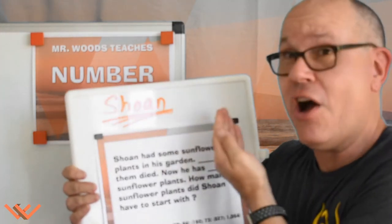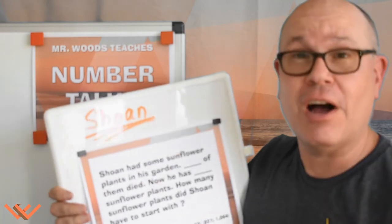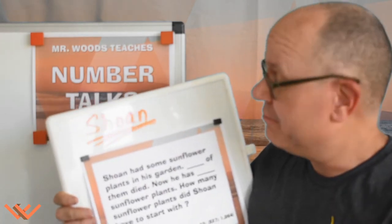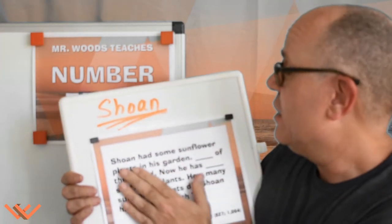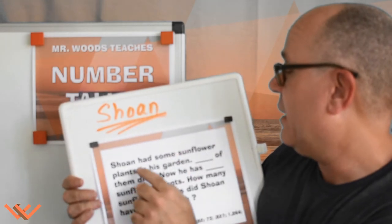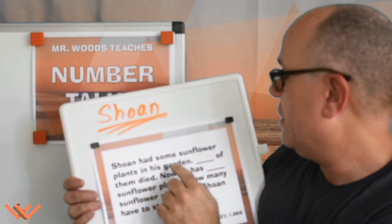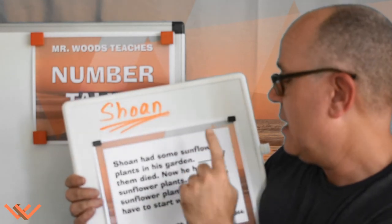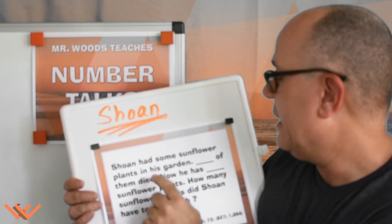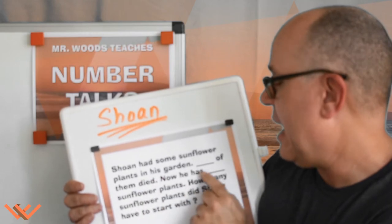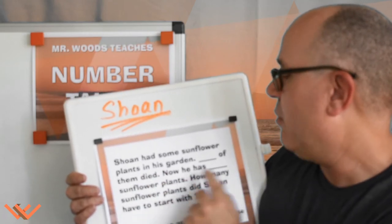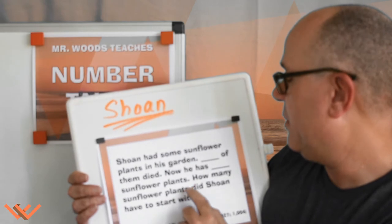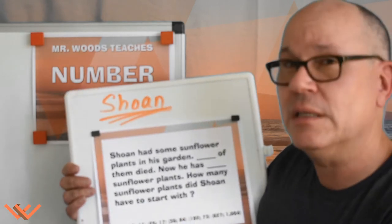Today I have my good friend, Shone. Shone's an awesome dude. Let's show him how we can do some math. Shone had some sunflower plants in his garden. Thirteen of them died. Now he has eleven sunflower plants. How many sunflower plants did Shone have to start with?